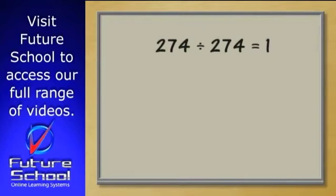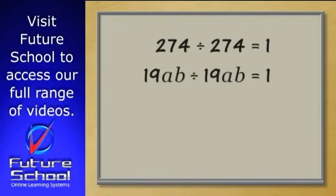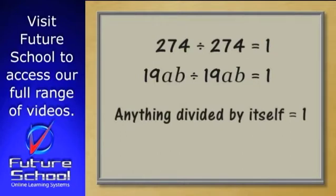I'm sure you know that 274 divided by 274 is one. Similarly, 19ab divided by 19ab is also one. Whenever you divide anything by itself, the result that you get is always one.